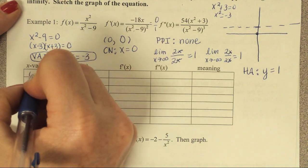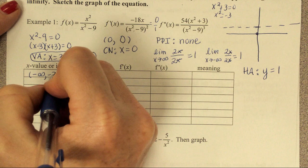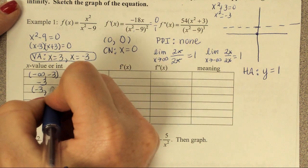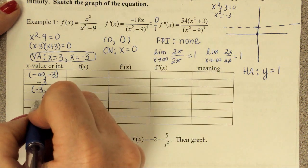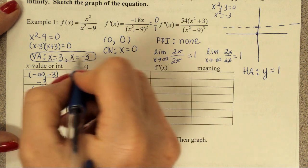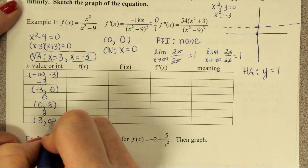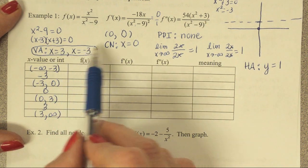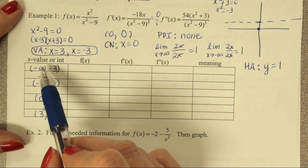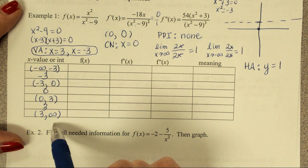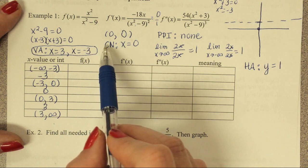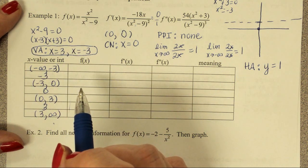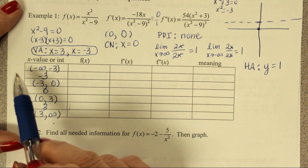Now I set up the chart. I have to go from negative infinity to a vertical asymptote, put in the vertical asymptote, then from the vertical asymptote to the critical number, put in the critical number, then from the critical number to the next vertical asymptote, put in the vertical asymptote, and from the vertical asymptote to infinity. We had three values going into this chart and ended up using seven rows — the pattern is: multiply the number of values by two and add one.